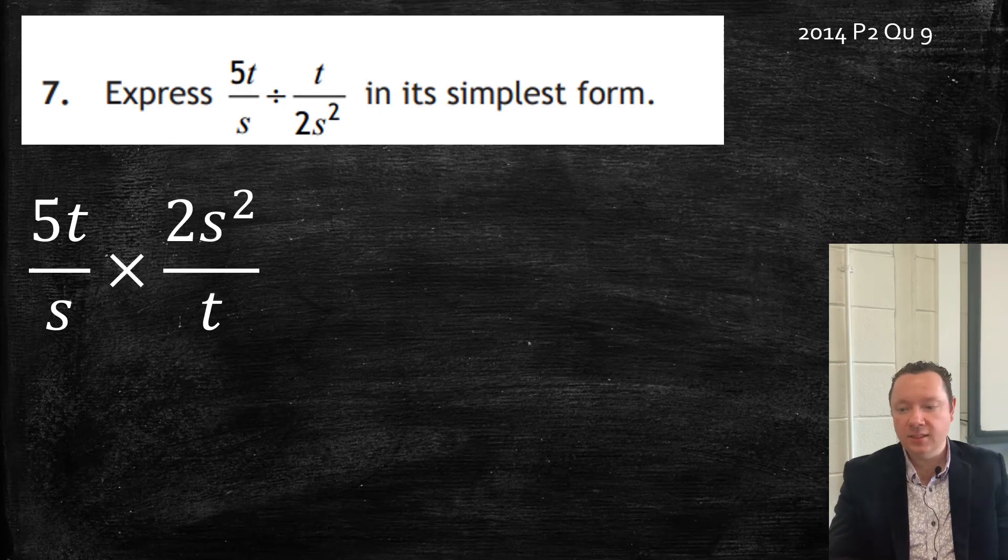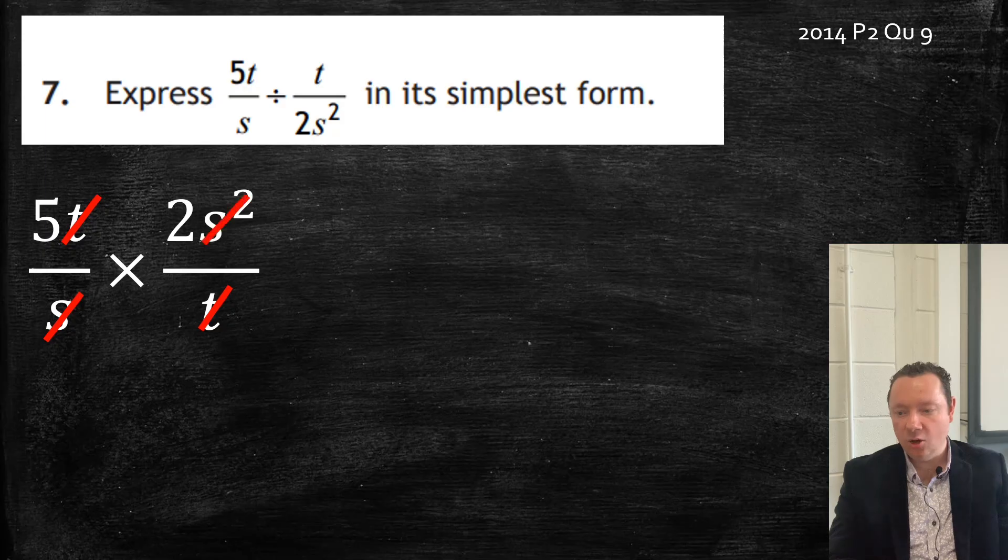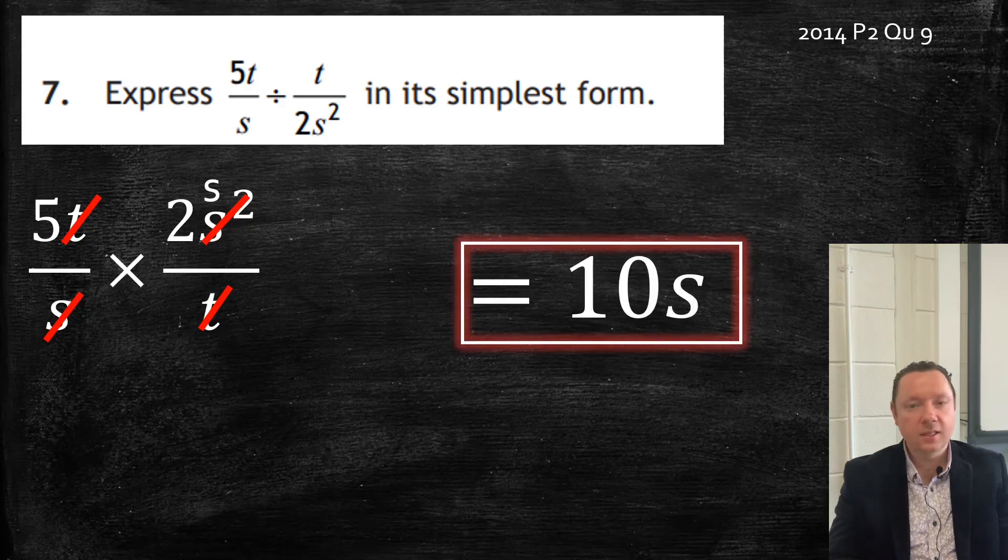Now we simplify in advance. So the t's can go. We can divide by an s and to get an s on the top still. And that's it. So we've got 5 times 2 is 10. 10s. Nice. Done.